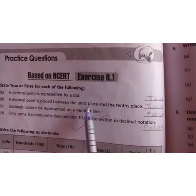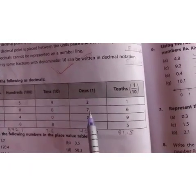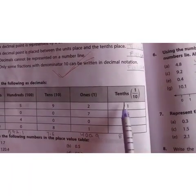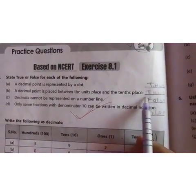A decimal point is placed between the unit's place and the 10th place. Yes, because this is unit's place and this is 10th place. And between these comes the decimal point. So again, the answer is true.